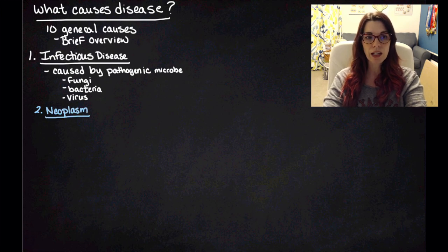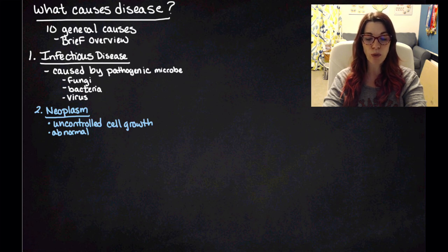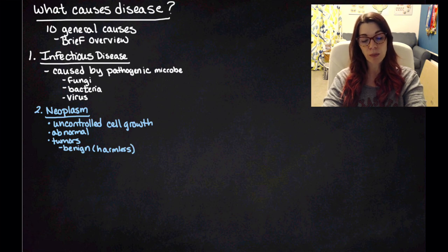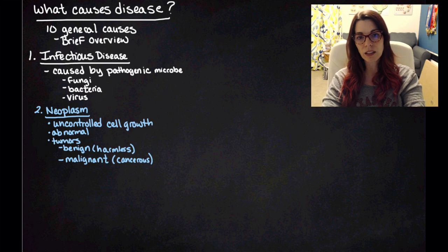Our second category or cause of disease is a neoplasm. A neoplasm is an uncontrolled cell growth, and it's going to be abnormal growth. So this is going to lead to a tumor. And these can be benign, harmless tumors, or they can be malignant, which are cancerous tumors. And I don't want you to stress too much over how that happens and how you tell the difference, because we're going to do an entire little mini module on that later.